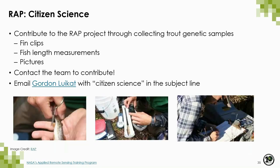The citizen science page provides folks with an overview of how to become engaged in the project. The University of Montana and the Flathead Lake Biological Station are focused on trout conservation. If you're in this region and would like to contribute, you can go to this page and find more information on how to collect samples, how to measure fish length, and how to provide your information to the study. You can also email one of the members of the RAP team to see how you can contribute.